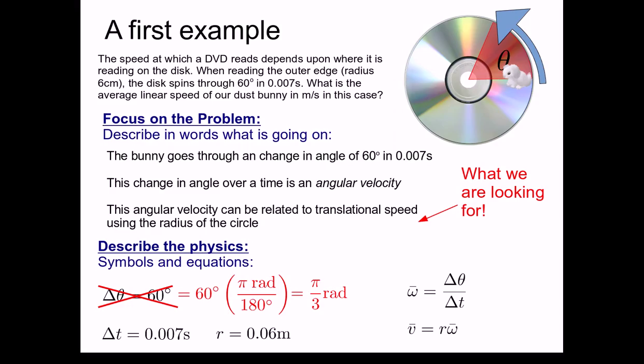Now it turns out we actually have enough information to solve the problem. We're looking for v bar. We have the delta t given in the problem. We have the delta theta, π over 3 radians. This gives us the omega bar that we would need. And the radius of the circle is also given in the problem. So following this chain of logic, we would be able to solve for v bar. In your quiz, you will have to repeat this chain of logic along with a few other questions. This concludes this video.